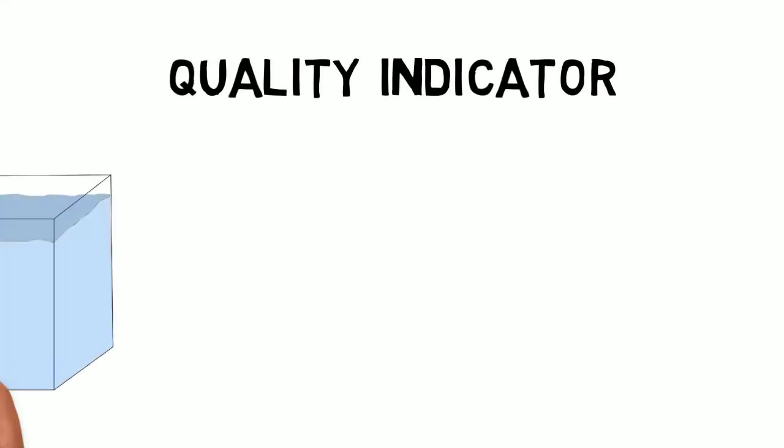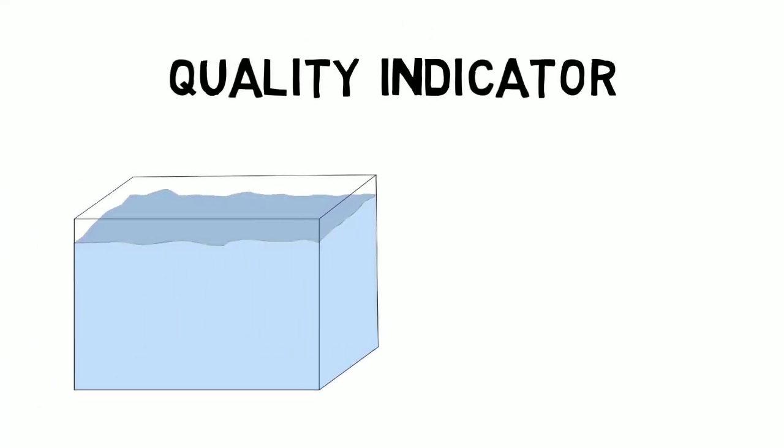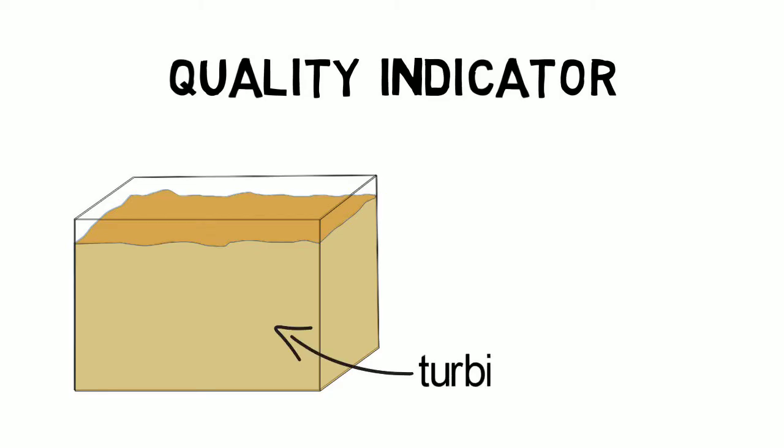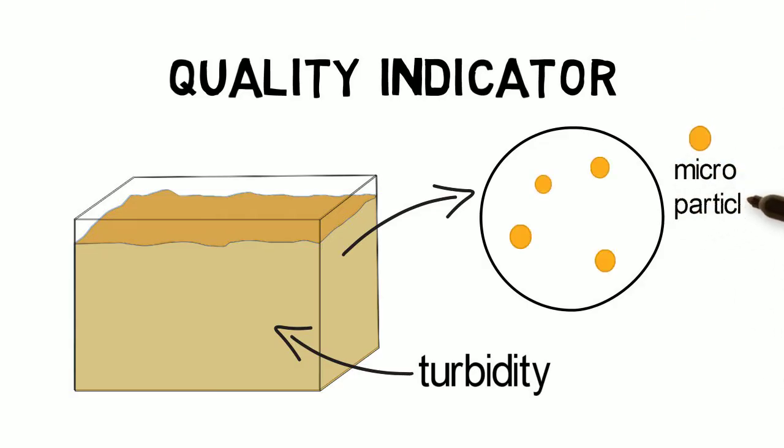Water turbidity is an important measuring unit to determine water quality and describes the degree of water cloudiness. Turbidity is caused by a huge number of small particles that are suspended in water and invisible to the human eye.